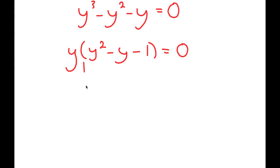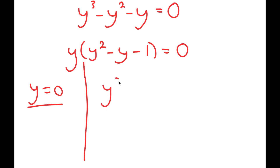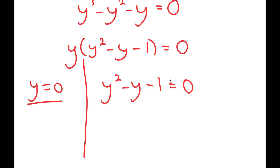This gives me two equations: y equals 0, which is a solution, and y squared minus y minus 1 is equal to 0.